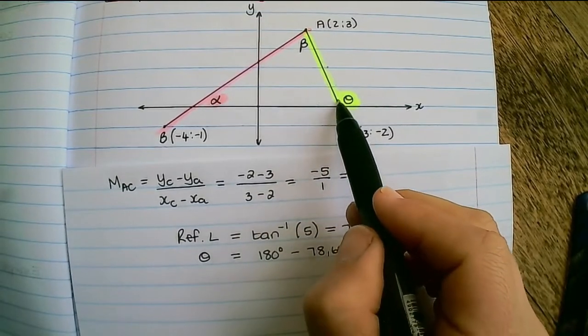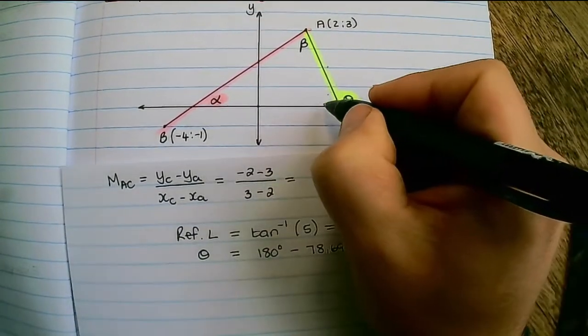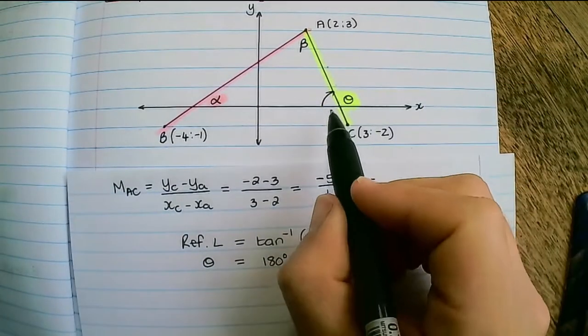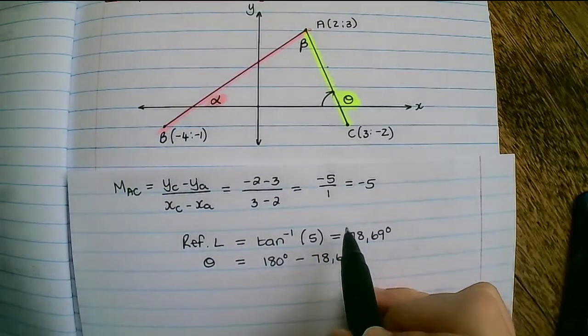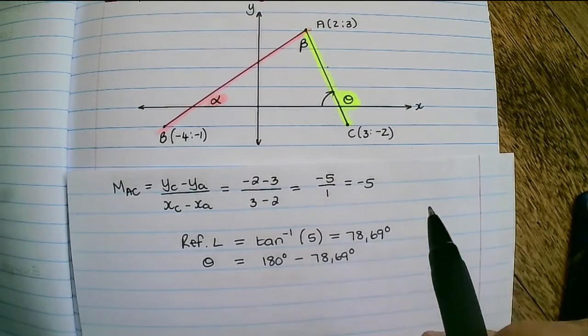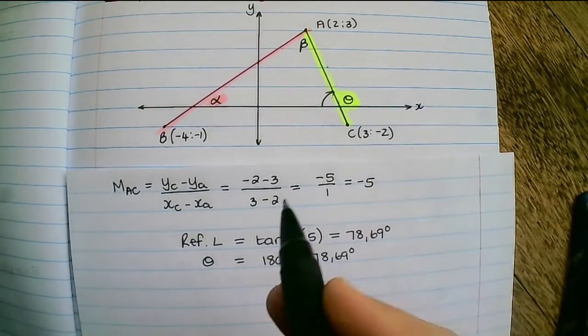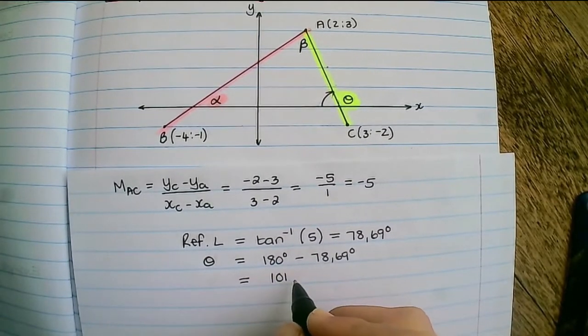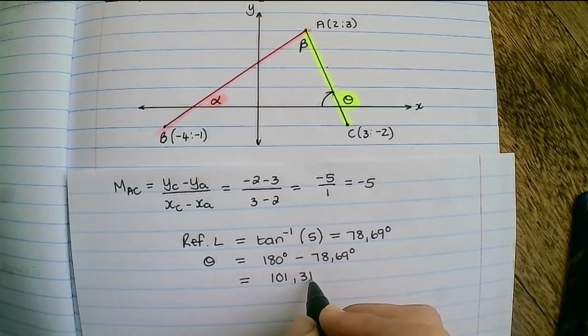So this reference angle is the angle on the inside here and we only use this when we have a negative gradient. And that will allow me to solve theta, which is now 101.31 degrees.